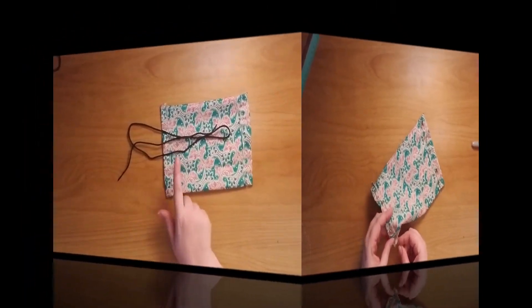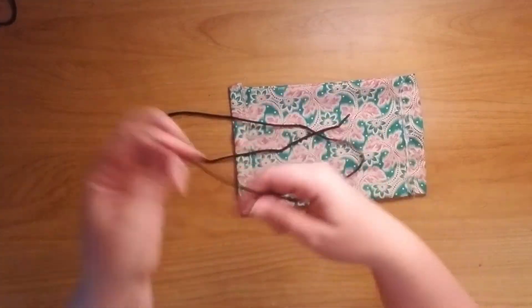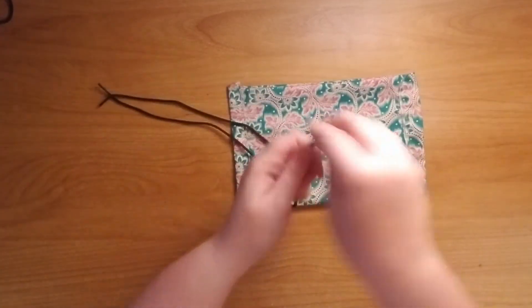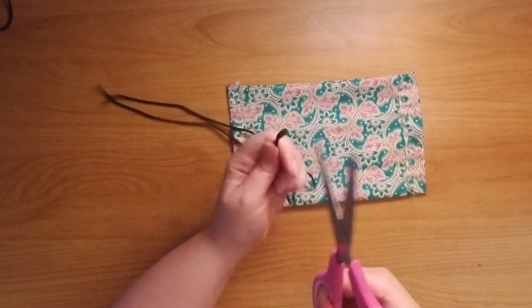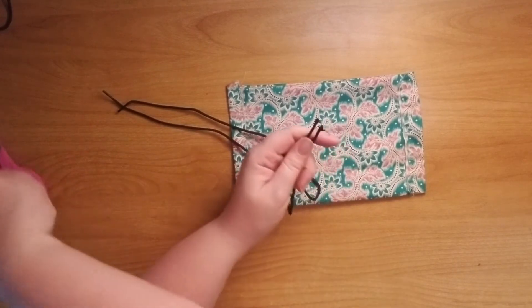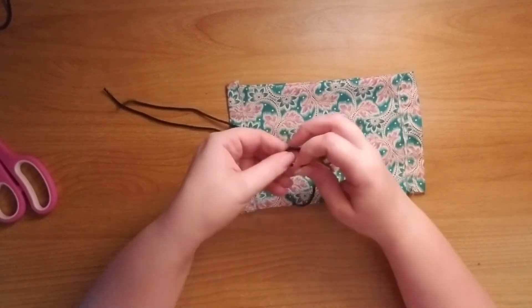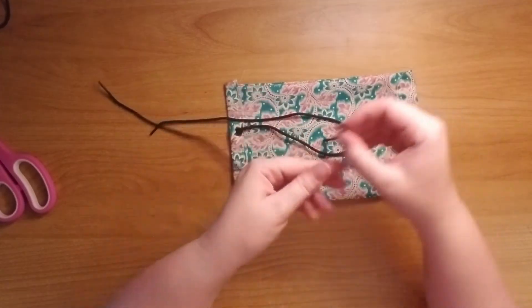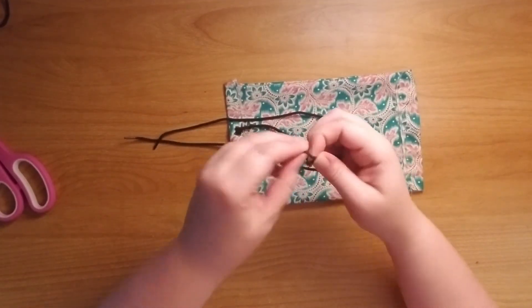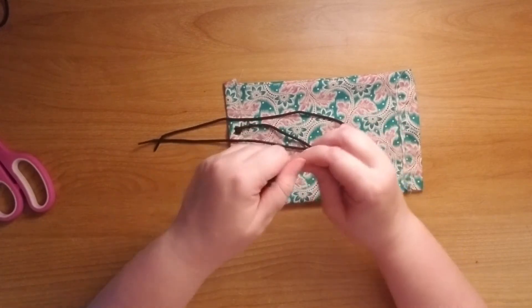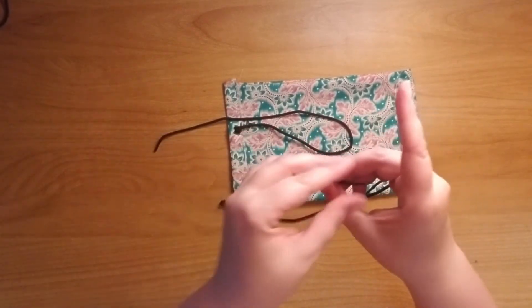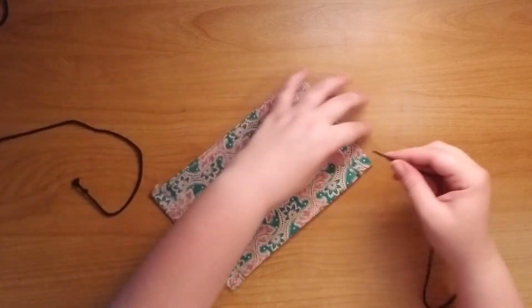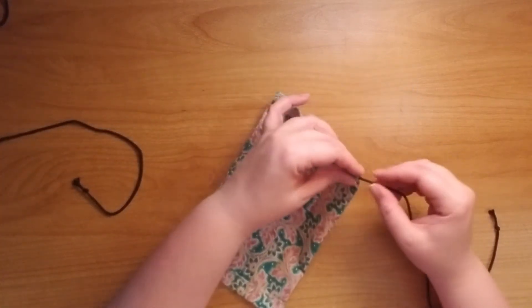For the final step, you need your shoelace. The first thing you're going to do is take your shoelace, fold it in half, and cut. I like to put a little knot at the ends so your shoelace doesn't completely unravel. Then take the plastic part, which is called an aglet, and you're just going to thread that through the little sleeve you made.